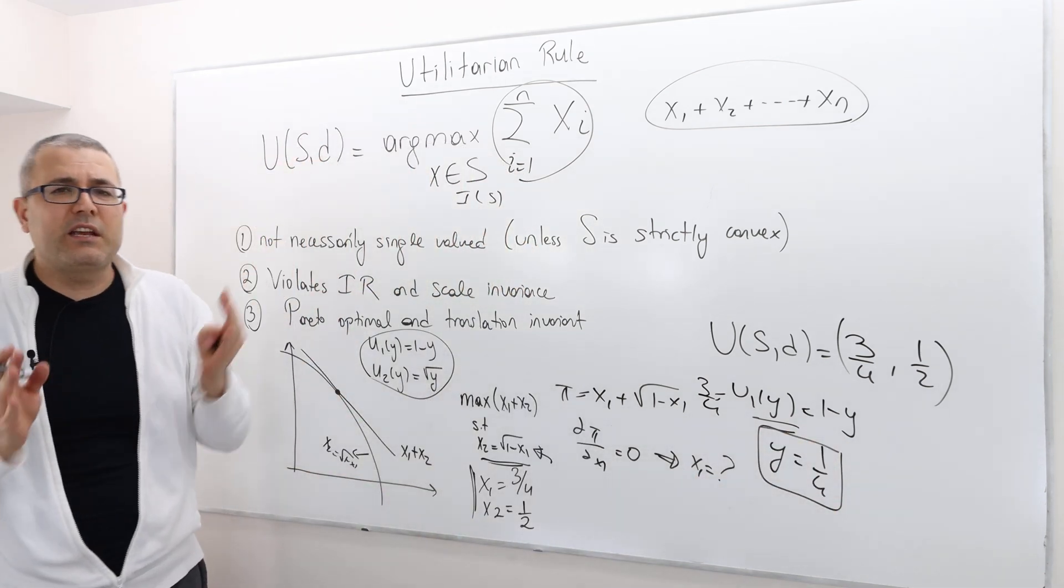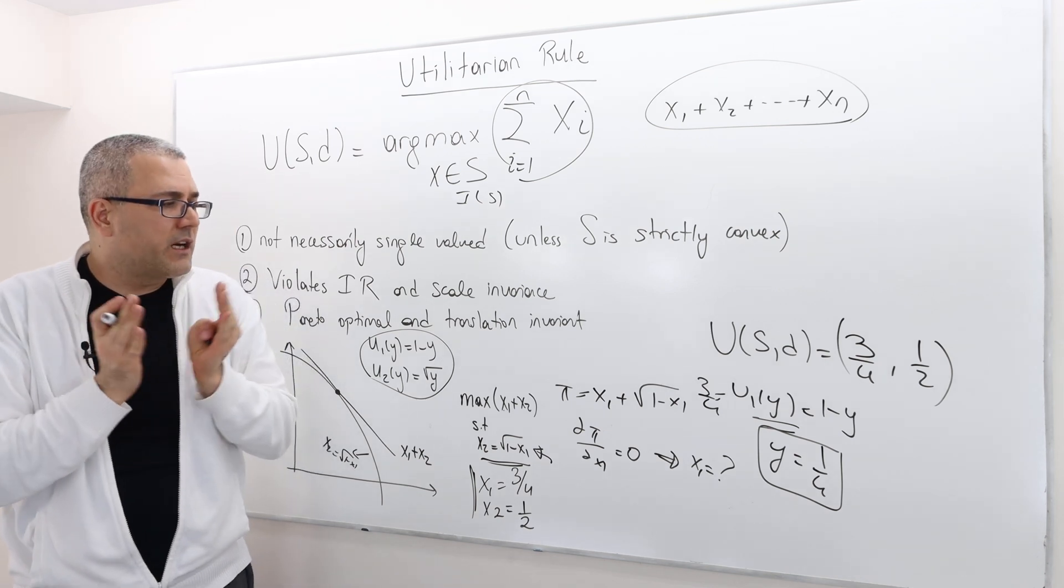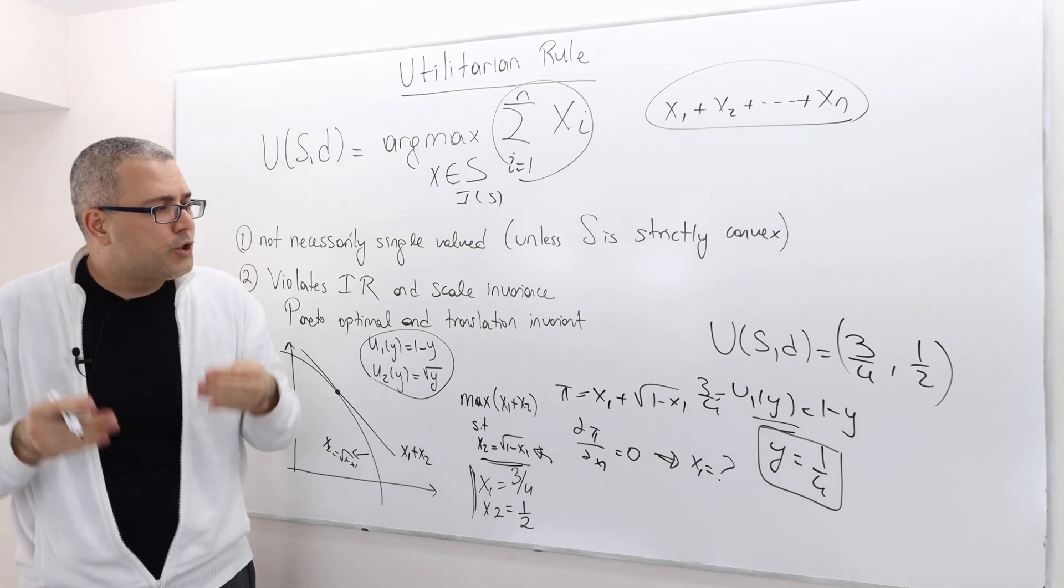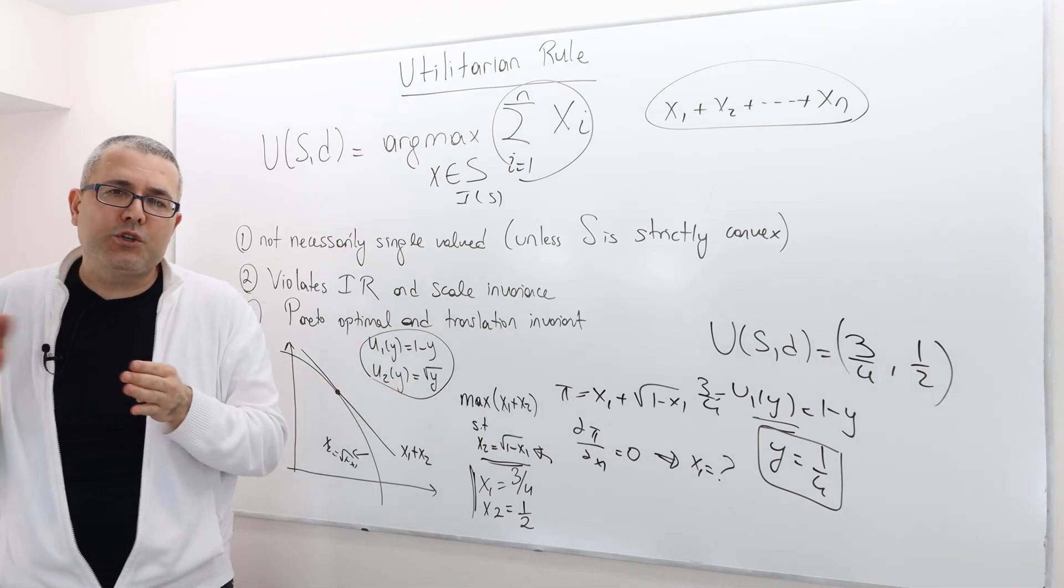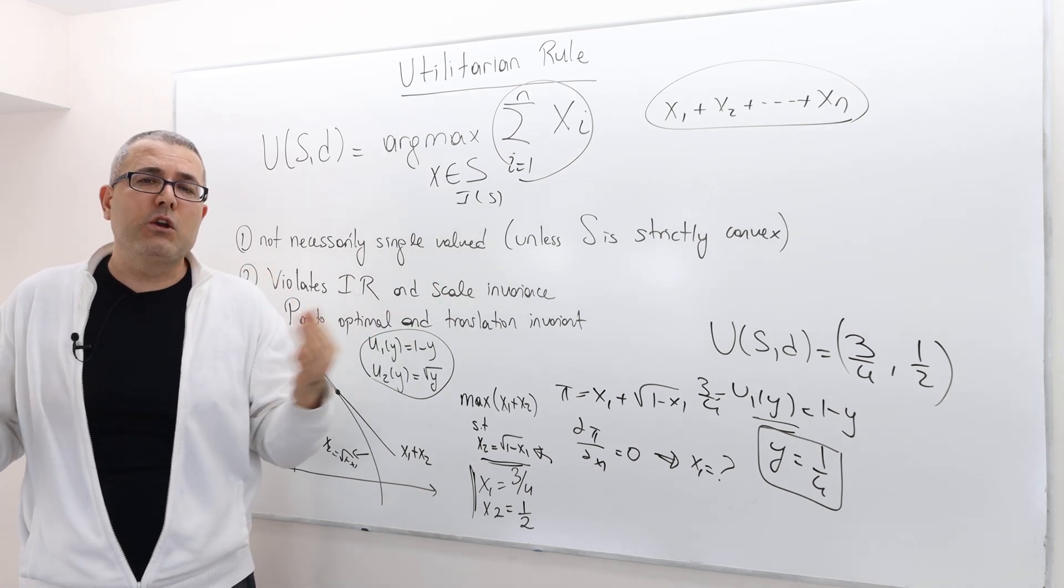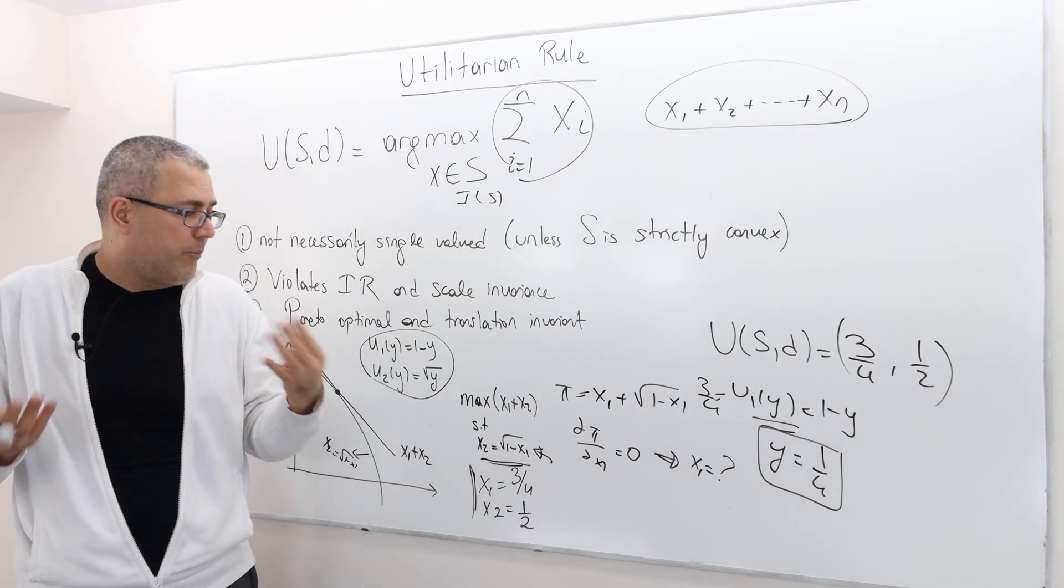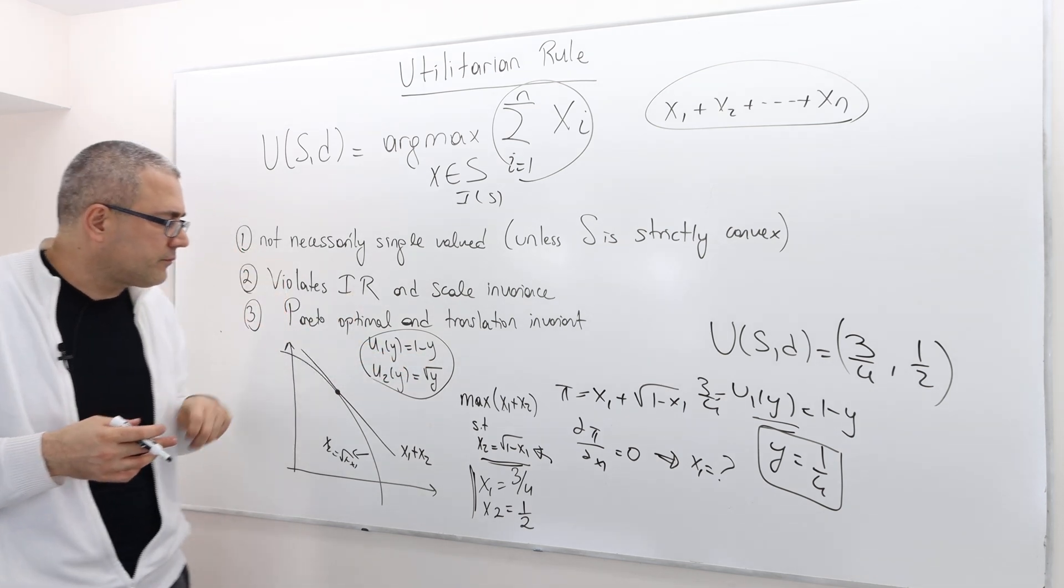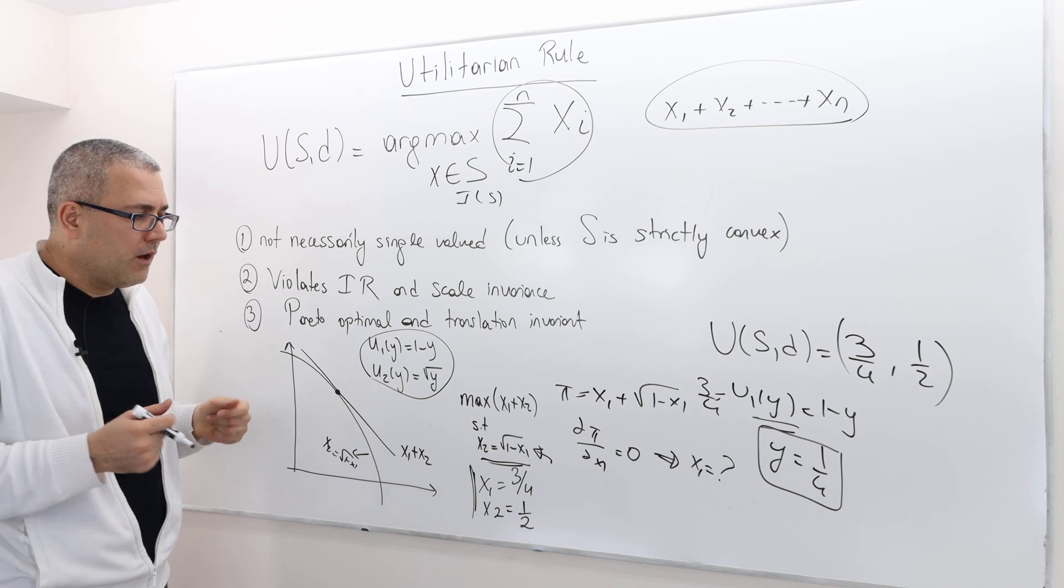So according to utilitarian rule, player 2 should get 1/4 of the surplus and player 1 should get 3/4 of the surplus, mainly because he gets more utility out of this bargaining problem.